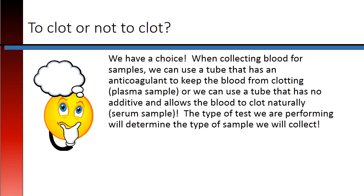When collecting blood for samples, we can use a tube that has an anticoagulant to keep the blood from clotting, which produces a plasma sample, or we can use a tube that has no additive and allows the blood to clot naturally, which gives us a serum sample. The type of test we are performing will determine the type of sample we will collect.